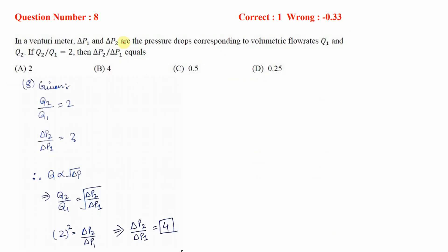This question is very simple if you remember that volumetric flow rate in a venturimeter is directly proportional to the square root of the pressure drop. They have given Q2/Q1 equals 2, so Q2/Q1 equals the square root of the pressure drop ratio. Substituting the values, you get the pressure drop ratio as 4. Option B is correct.